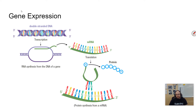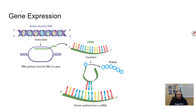You have a protein that is now able to go and do whatever that protein does. There are various ways in prokaryotic and eukaryotic cells to regulate the expression of genes — meaning make them express faster or more, or inhibit them from expressing altogether.